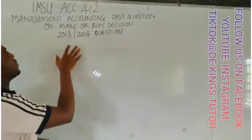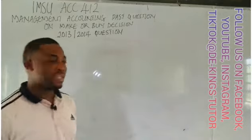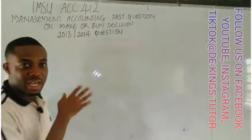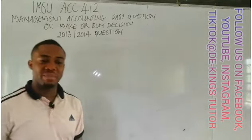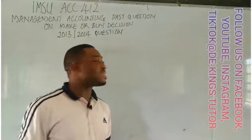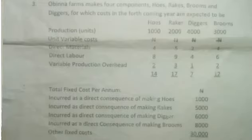This past question is from the 2013/14 set — the final past question for Inner State University, 2013/14 set. The question says: Obina Farms makes four components — holes, rigs, brooms, and diggers — for which costs in the forthcoming year are expected as shown.